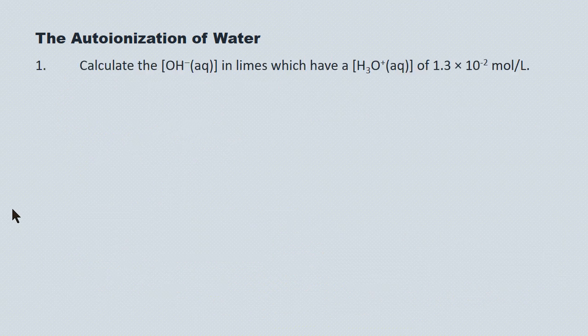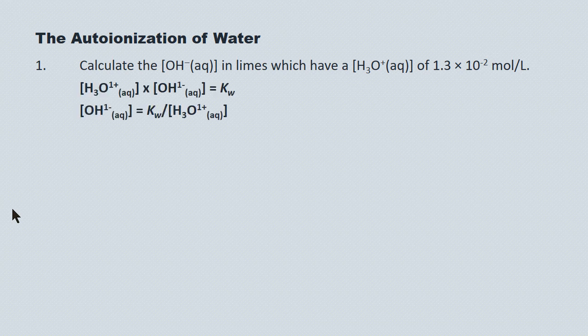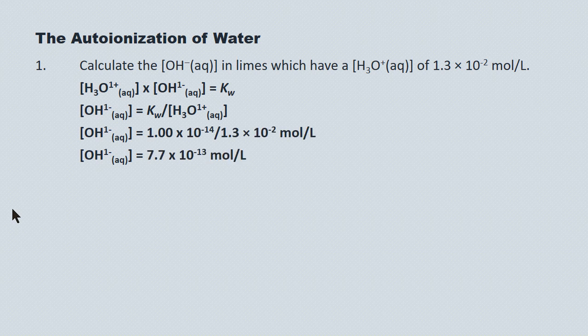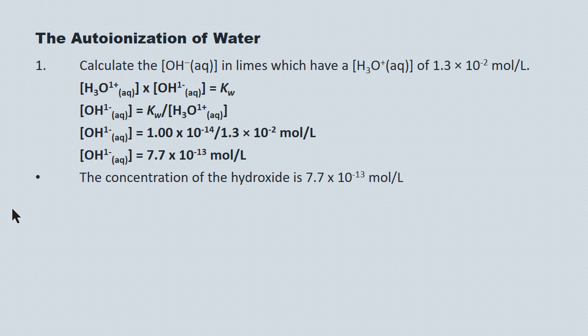Calculate the hydroxide ion concentration in limes, which have a hydronium ion concentration of 1.3 times 10 to the minus 2 moles per liter. We rearrange the Kw equation for the unknown, the hydroxide ion concentration, and substitute in the Kw and the hydronium ion concentration. We get a concentration of hydroxide of 7.7 times 10 to the minus 13 moles per liter.